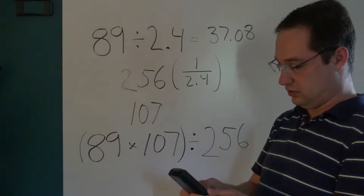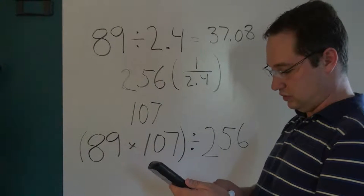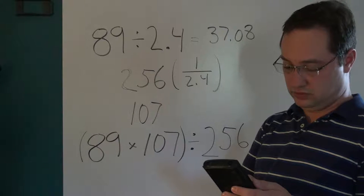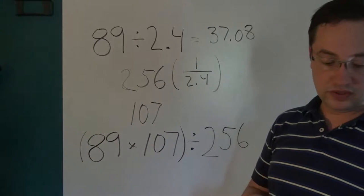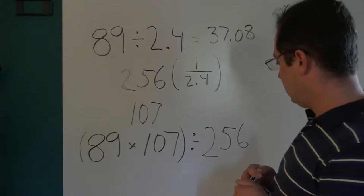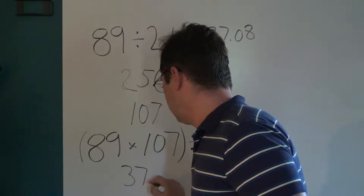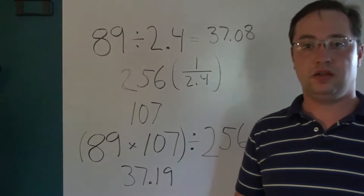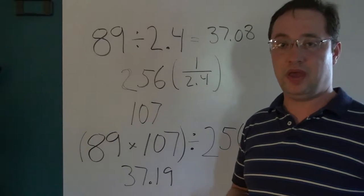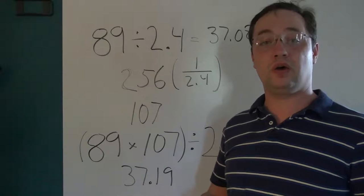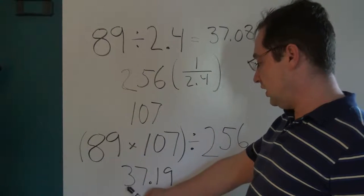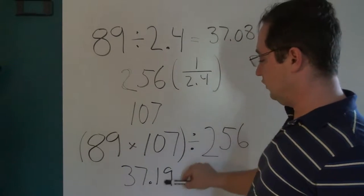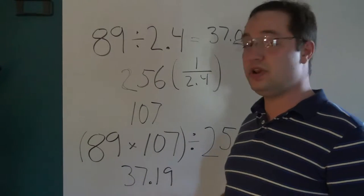So what does that actually come out to? 89 times 107 equals 9523, then divided by 256. This comes out to 37.19. And whenever you're doing integer type math the decimal place just gets lost, it gets omitted. So your final answer is going to be 37, which the answer we were looking for was 37.08. That's a pretty damn good answer.